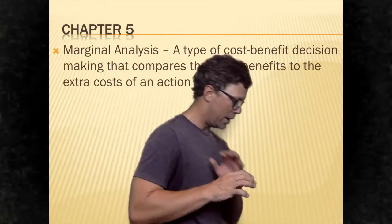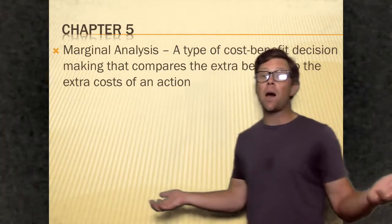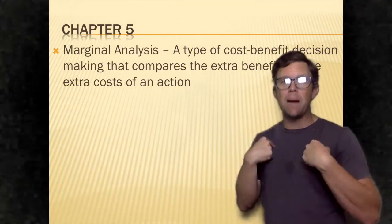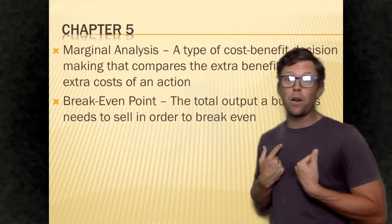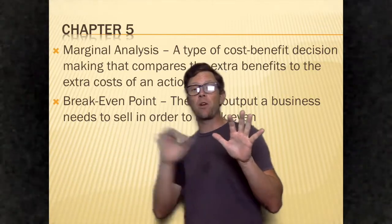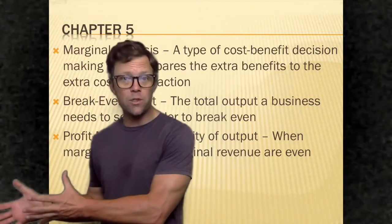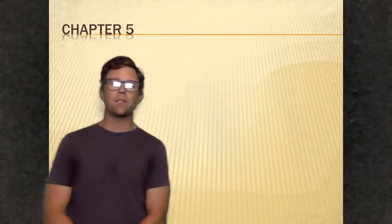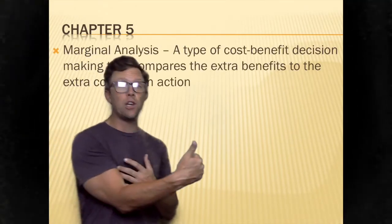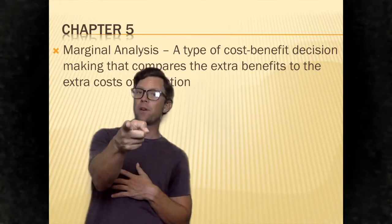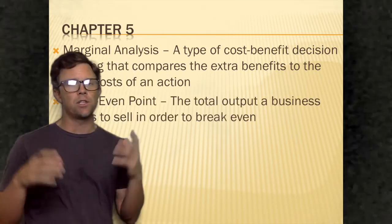Finally, our last vocab term: profit maximizing quantity of output — how much of a good or service should I produce to maximize profits? If I'm making $500 profit selling 10 items, and my profit drops to $450 selling 11 items, should I make that extra item? The answer is no — I'd lose $50 making that extra item. It's a misconception that you should produce as many goods or services as possible. There's actually a way to be efficient by figuring out your profit maximization — that's the number of goods and services you should produce.